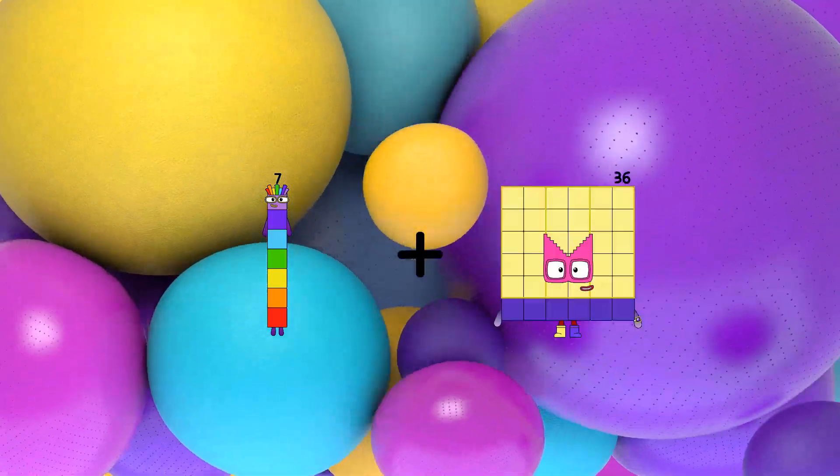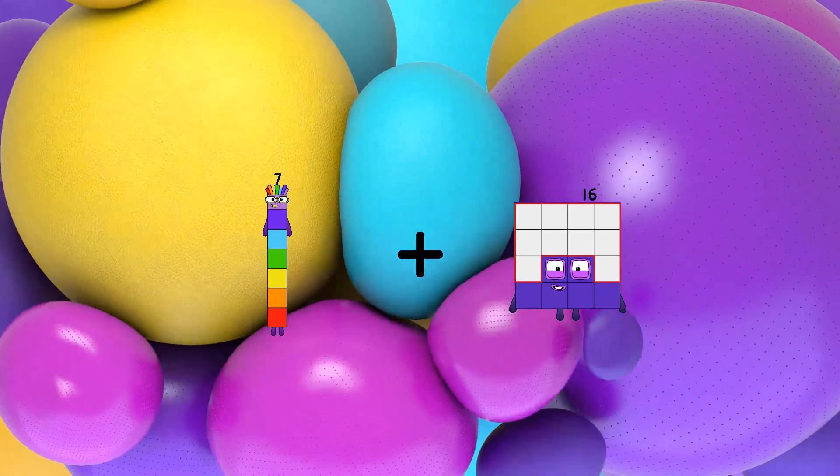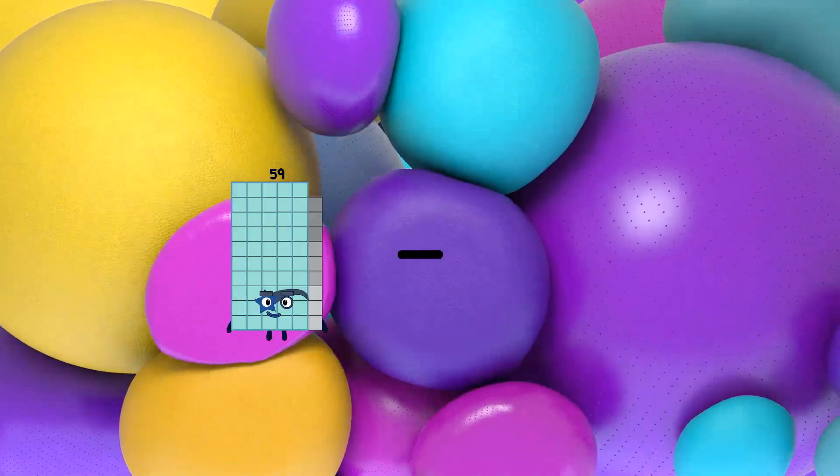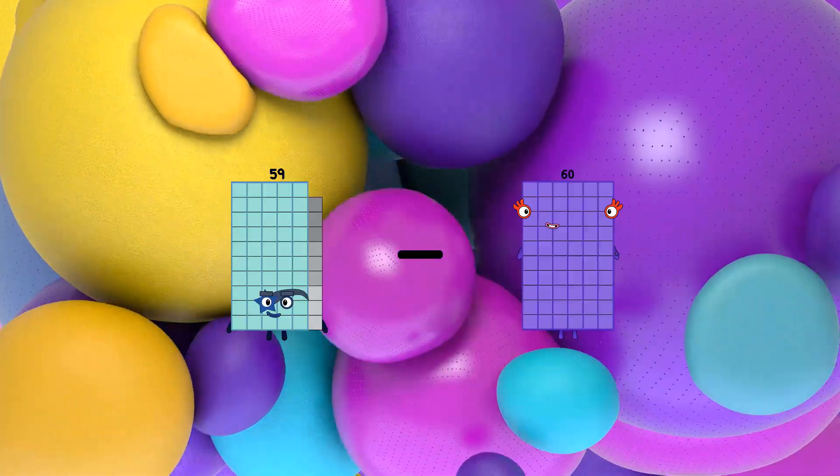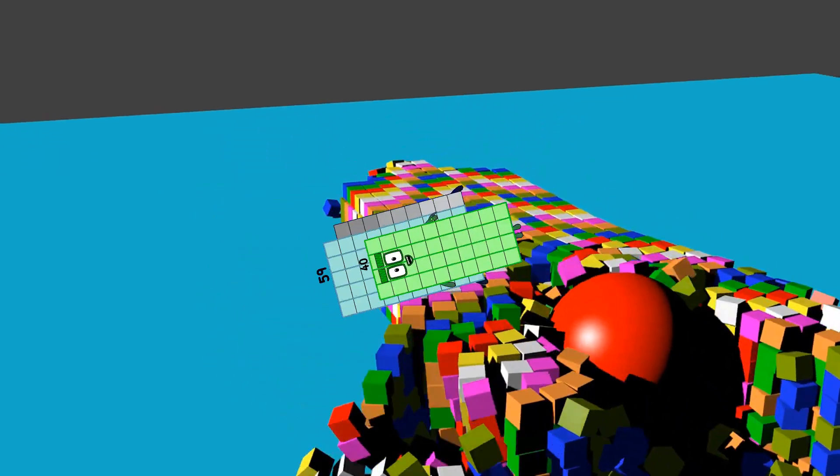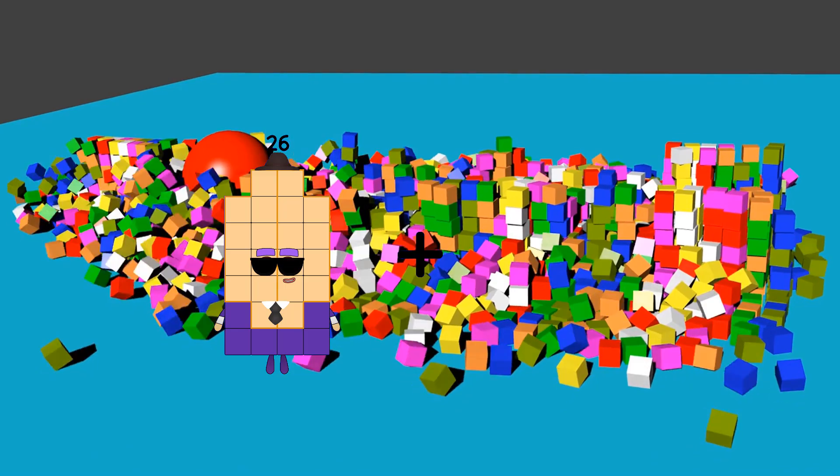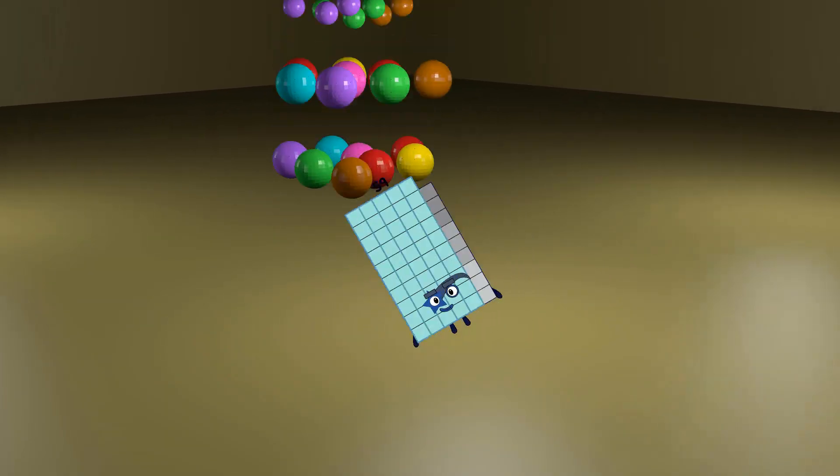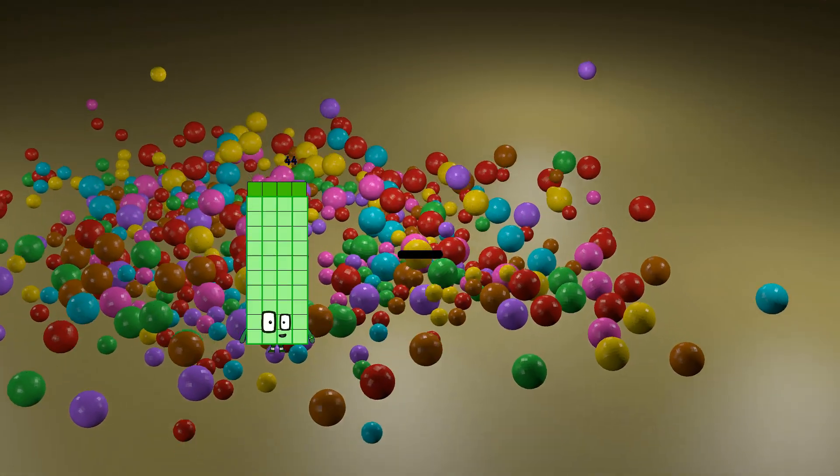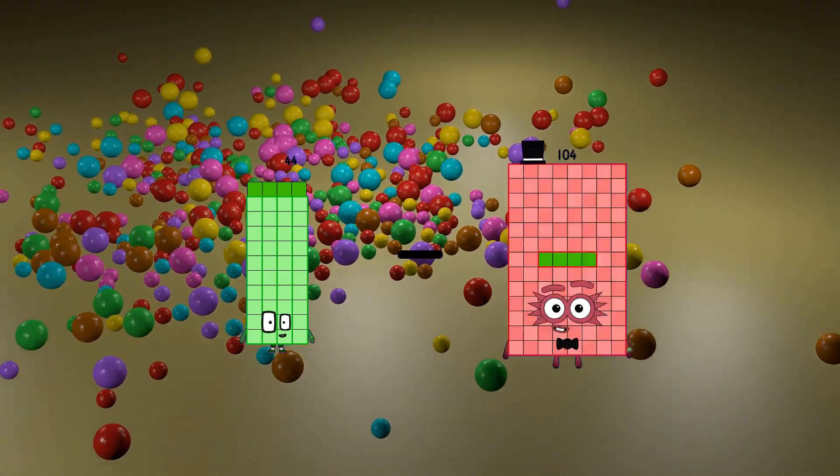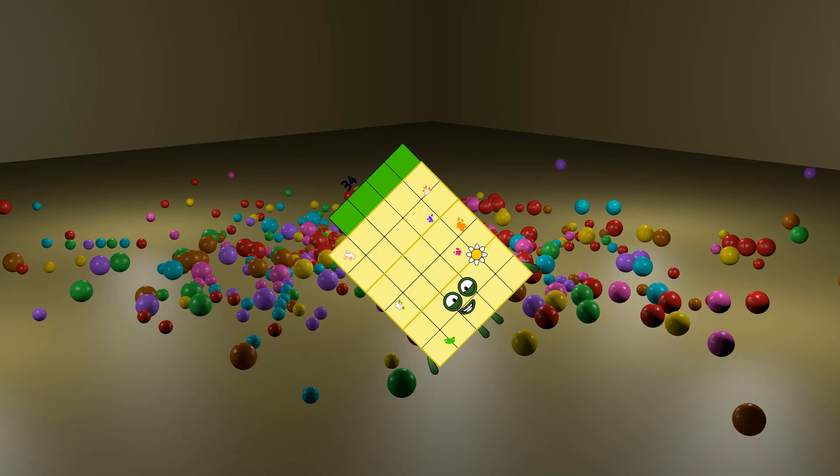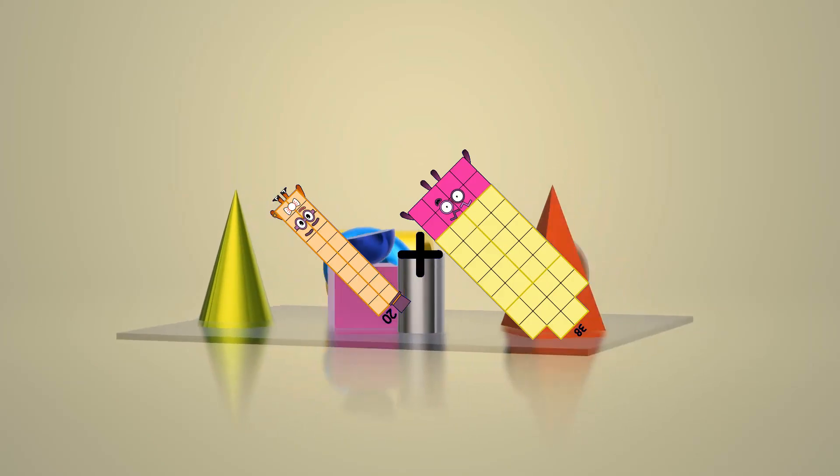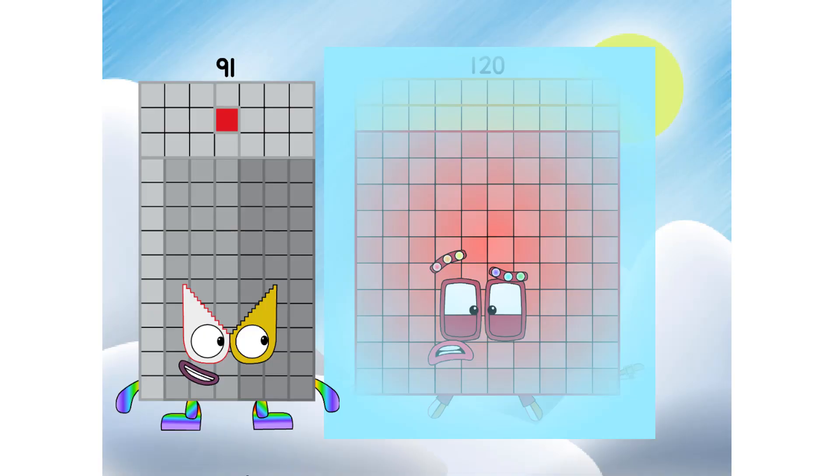7 plus 16 equals 23. 59 minus 40 equals 19, 26 plus 33 equals 59. 44 minus 10 equals 34.